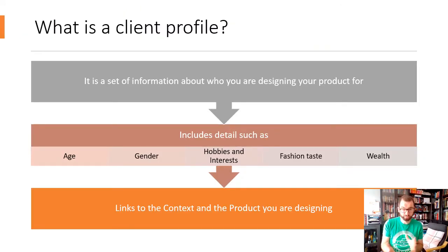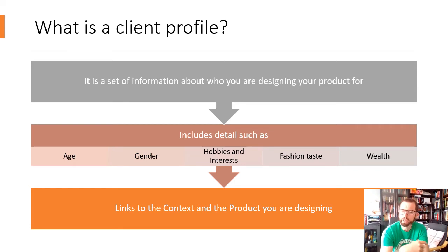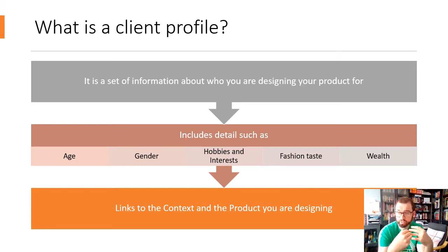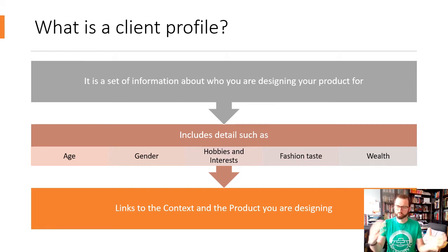So what is a client profile? It's a set of information about your client — the specific person or group of people you are designing for. You need to include details such as their age (it doesn't have to be exact — a range like 30 to 40 is fine), gender, hobbies and interests, fashion taste, and wealth. Knowing their interests might change how you design a product — for example, if they support Lincoln City, you might design something red and white. And if they don't have much money, they're unlikely to want a solid oak table; MDF or different materials would be more appropriate. Make sure it's all linked to the context.